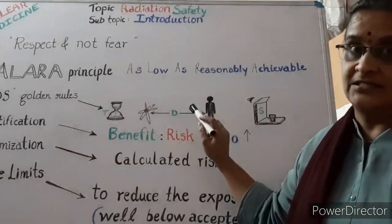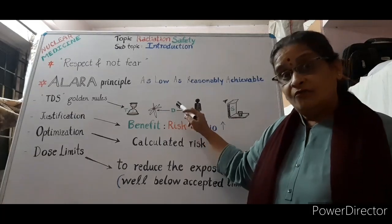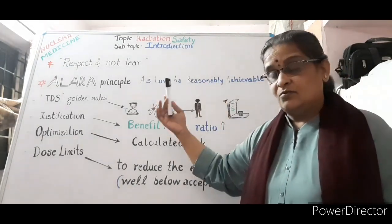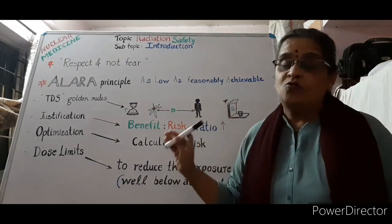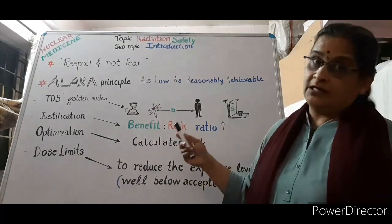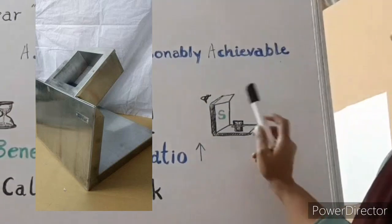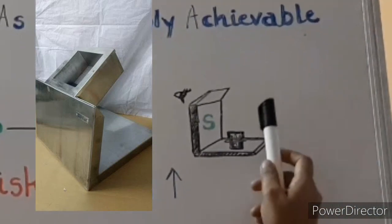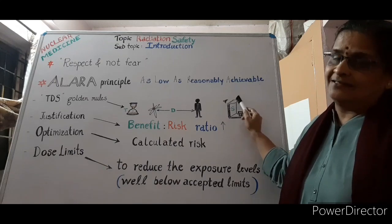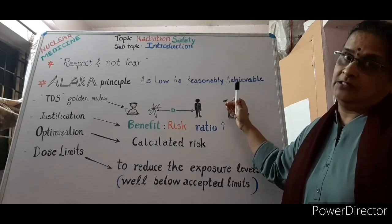D stands for Distance — maximum possible distance from the radioactive source. You may wonder how you will handle the radioisotopes, but your seniors use remote handling apparatus and tools when handling radioactive sources. For Shielding, the most common lead shield is used. You can see an L bench here, used for keeping the radioactive sources, and the person working operates through the lead glass. All of this shields the radiation worker from nuclear radiations.